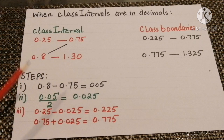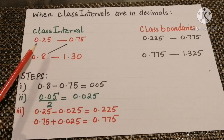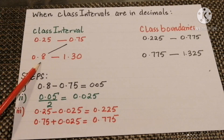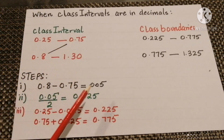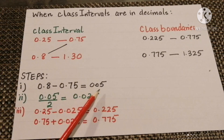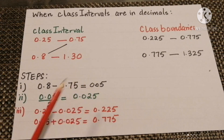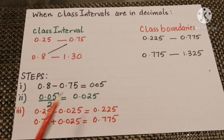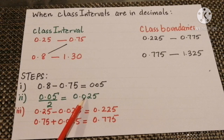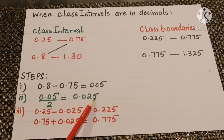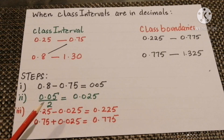We follow the same steps: subtract 0.75 from 0.80, which gives 0.05. We divide by 2 and get 0.025. Now we will subtract 0.025 from the lower class limits and add 0.025 to the upper class limits to make the class boundaries.